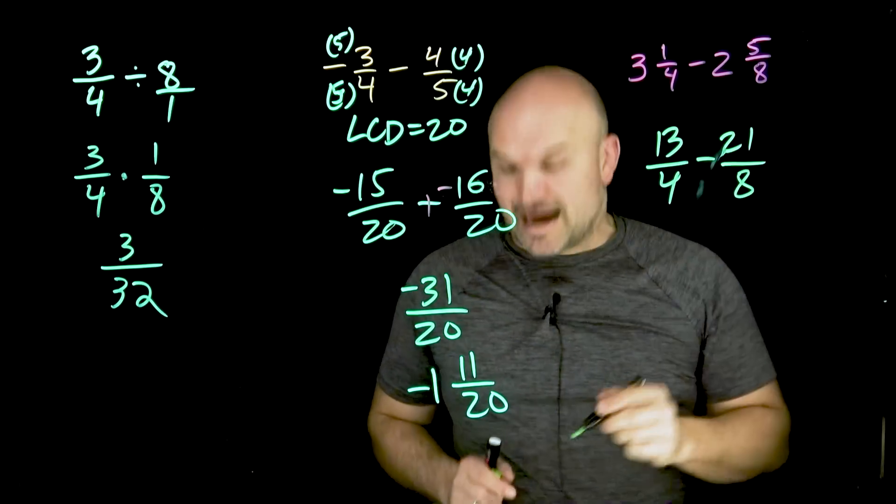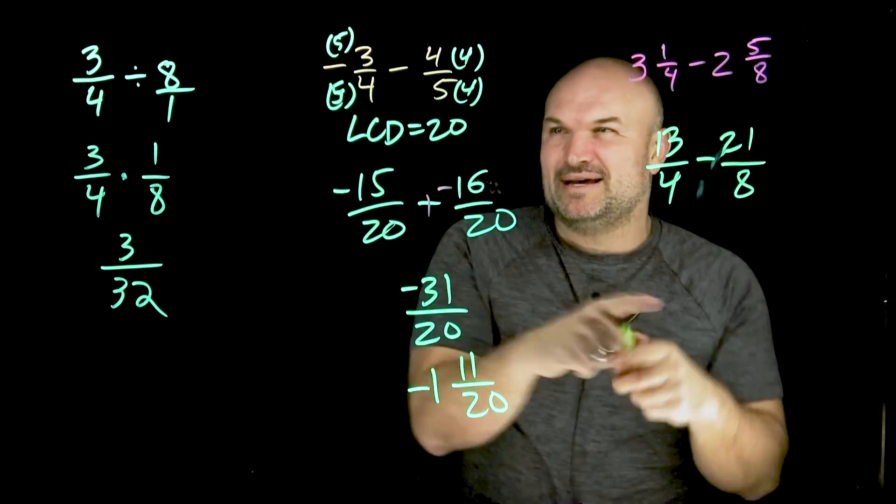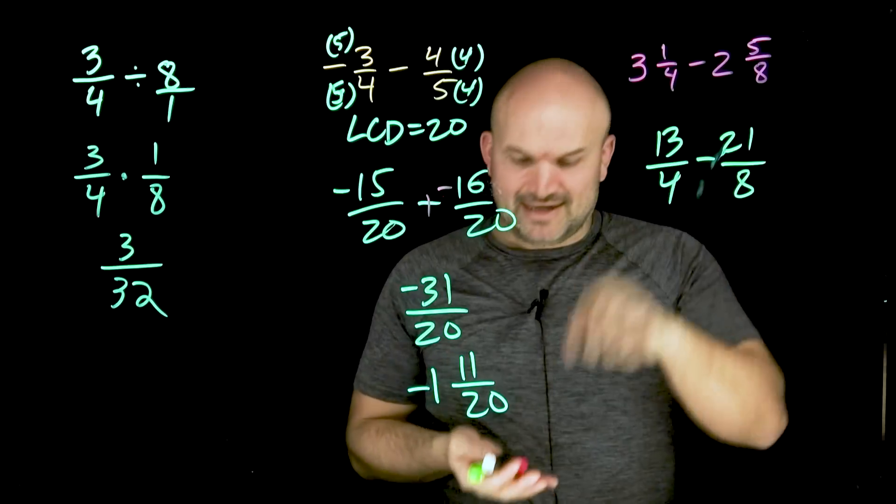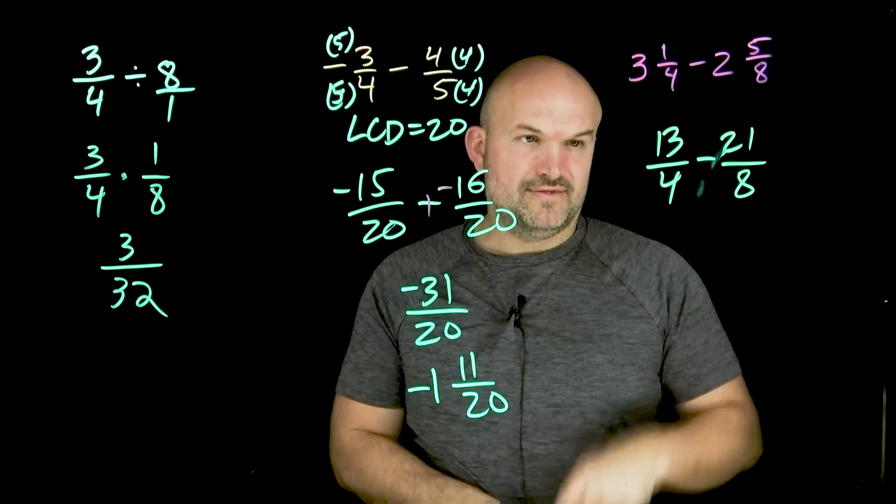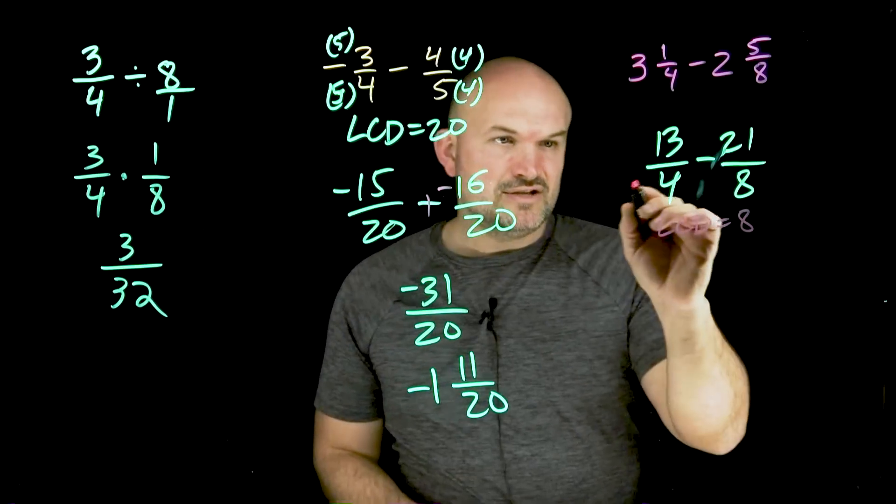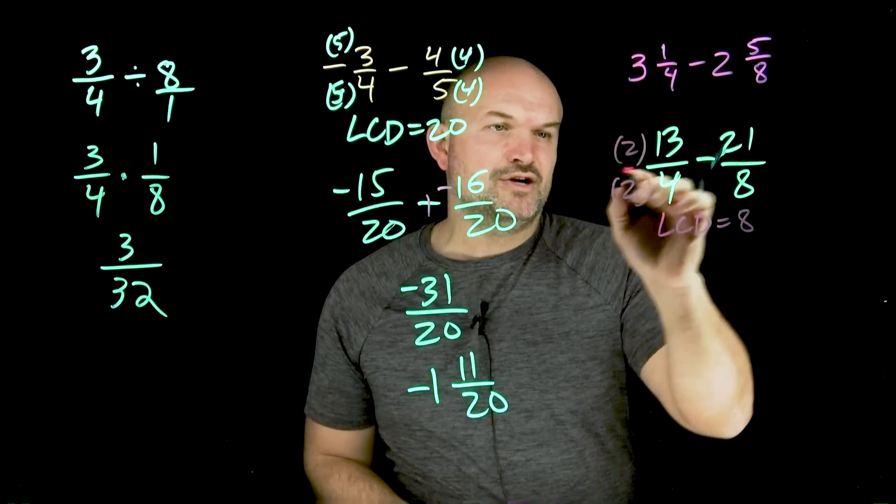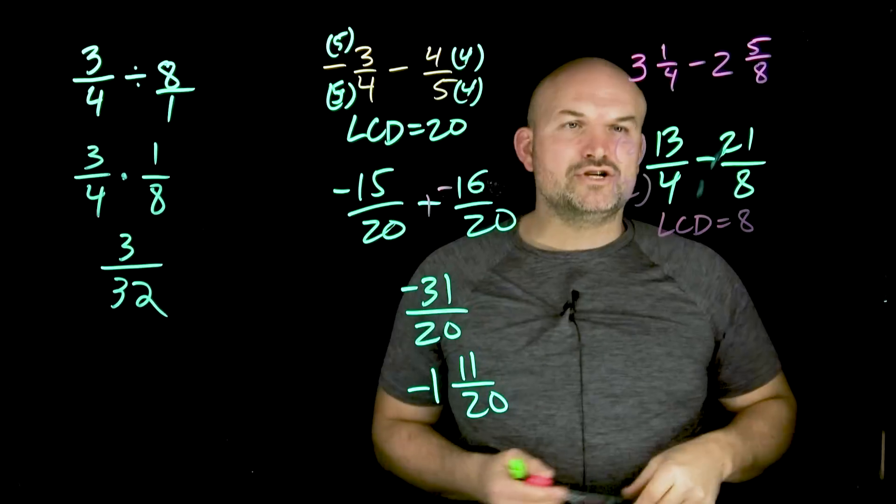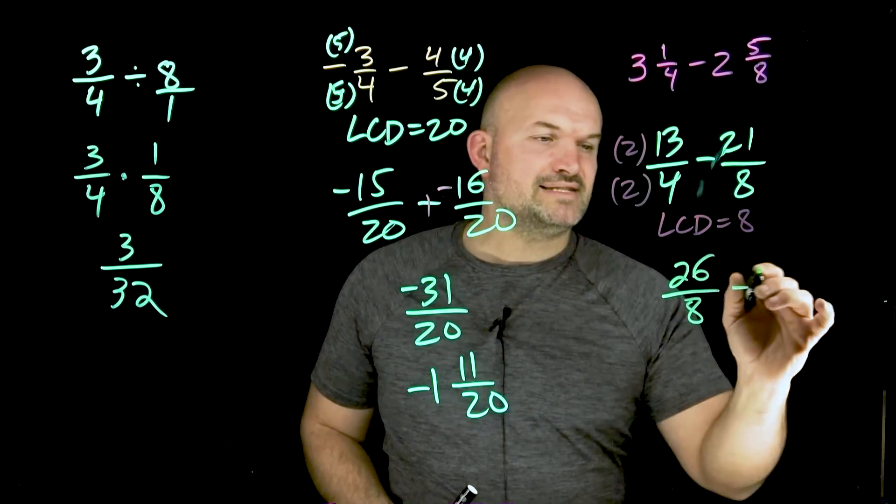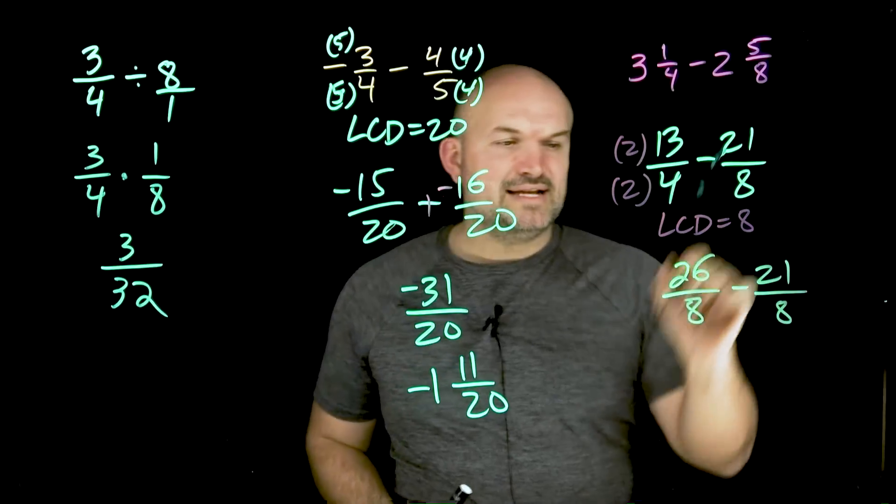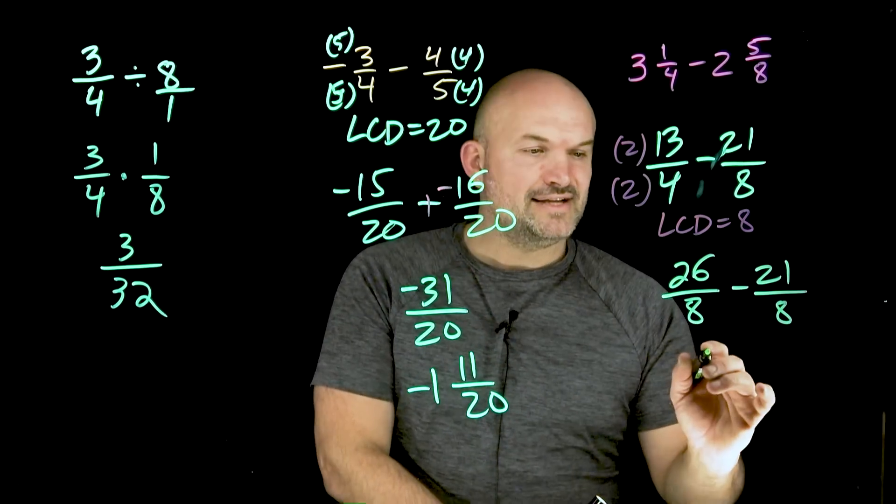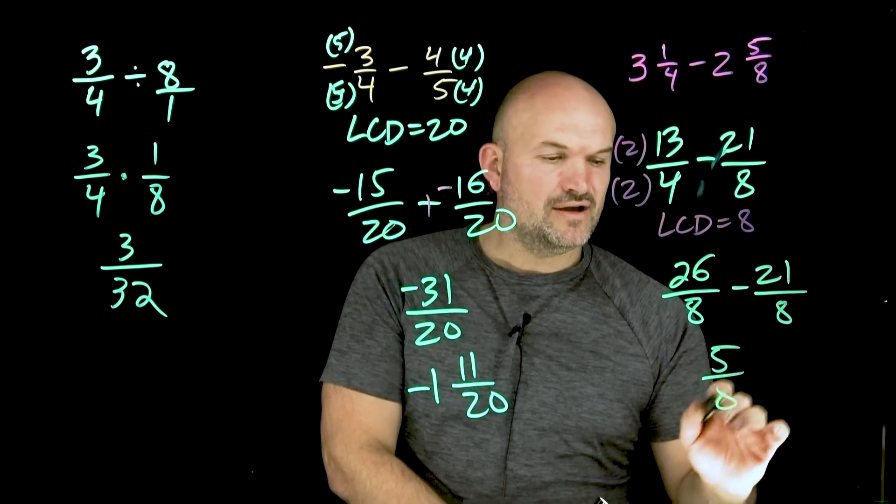Now I got to get them to be common denominators. In this case, I wouldn't want to multiply them, right? Remember I kind of gave that example. I don't want a common denominator 32. I recognize if I just multiply here this 4 by 2, I automatically get 8. So my LCD in this case is going to be 8. So that means all I need to do is multiply by 2 on this left-hand side. So 2 times 13 is going to be 26 all over an 8 minus 21 over 8. And 21 minus 26 is going to be 5. And so therefore, I'm going to get a final answer of 5/8.